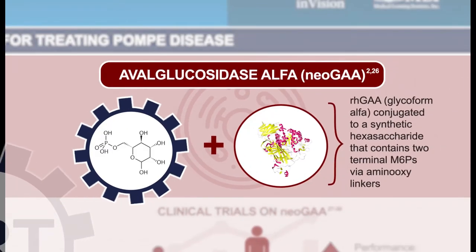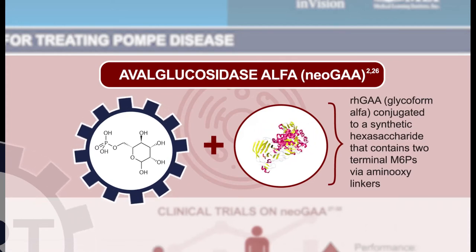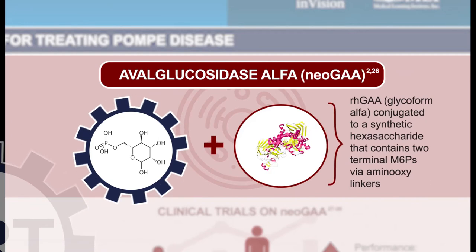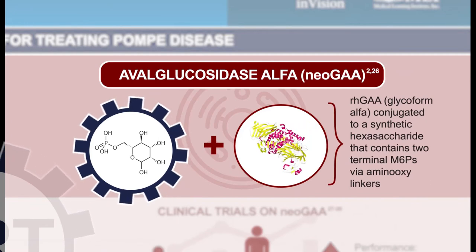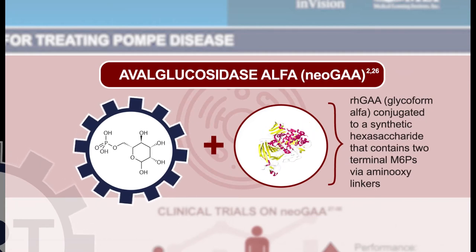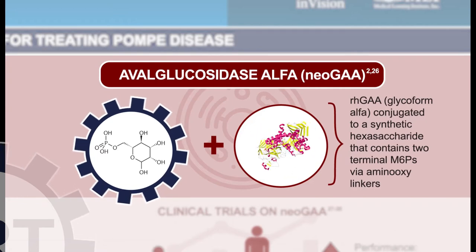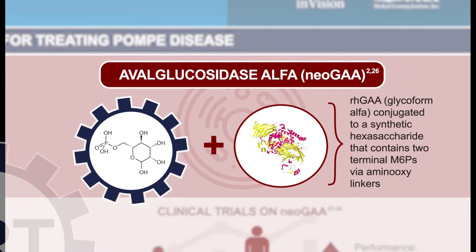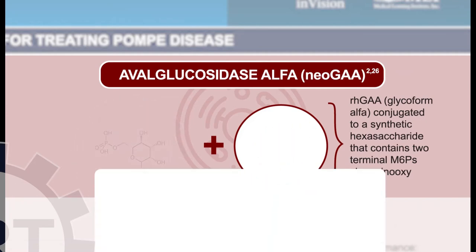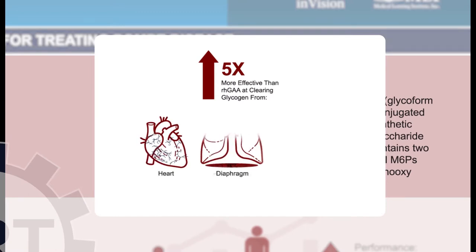This is the approach taken for the second-generation enzyme replacement therapy in clinical trials for Pompe disease. The name of the second-generation product is avalglucosidase alfa, or Neo-GAA. Avalglucosidase alfa is a recombinant version of GAA conjugated with additional mannose-6-phosphate residues, designed to increase cellular uptake at the target tissue. In preclinical studies, it was demonstrated to be five times more effective at clearing glycogen from the heart, diaphragm, and skeletal muscle.